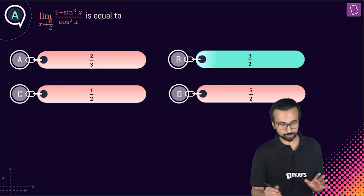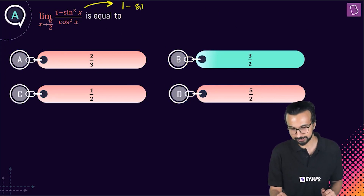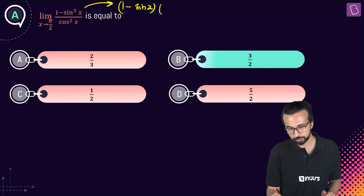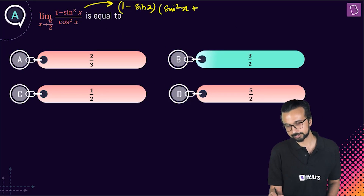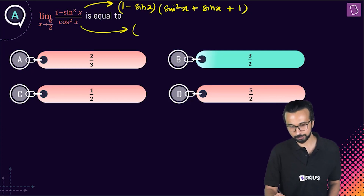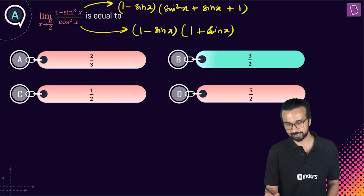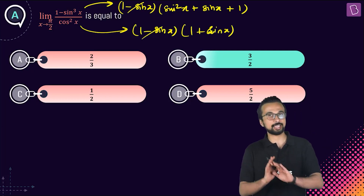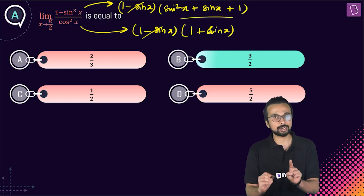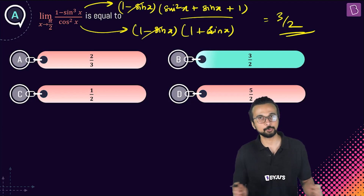To summarize: (1 - sin³x) was written as (1 - sin x)(sin²x + sin x + 1), the denominator as (1 - sin x)(1 + sin x). Cancel (1 - sin x), then substitute x = π/2 directly to get 3 by 2 as the final answer.